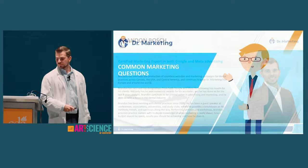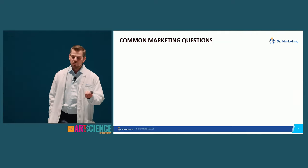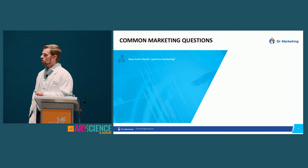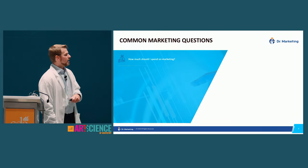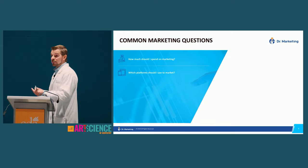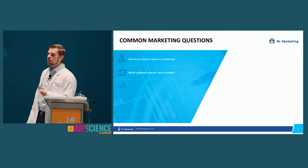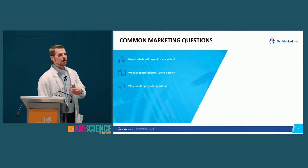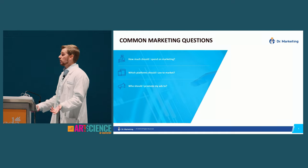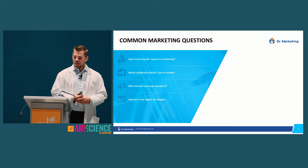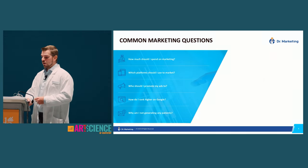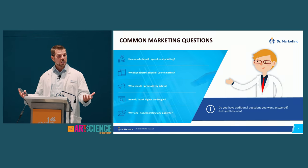There are typically five questions that come up when we start going down the path for marketing. First, how much money do you spend — what's your budget? Second, how should I spend it — Google, print, dating websites? Third, who do I target — men, women, specific geography, people with kids? Fourth, how do I rank higher on Google? And fifth, what happens if I start marketing and don't generate anything?